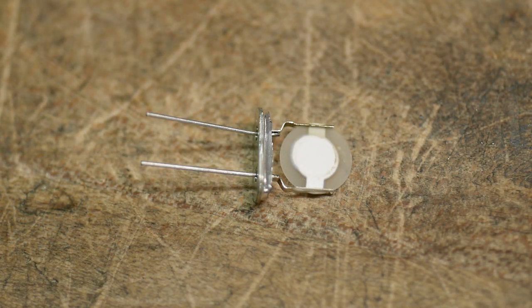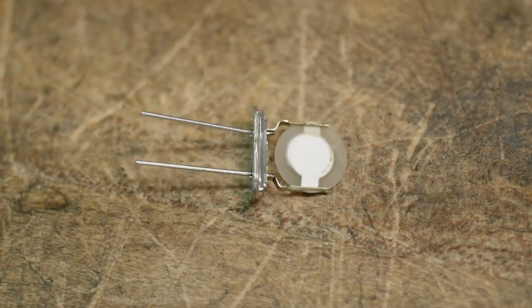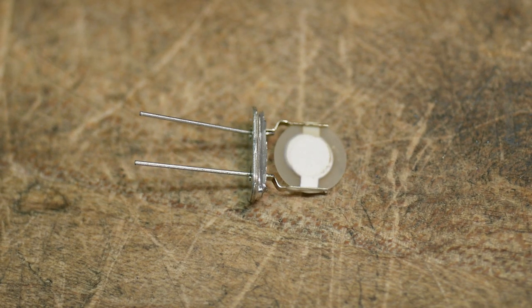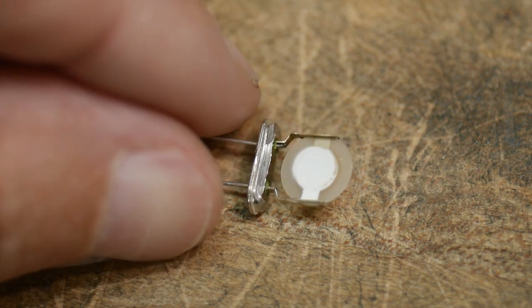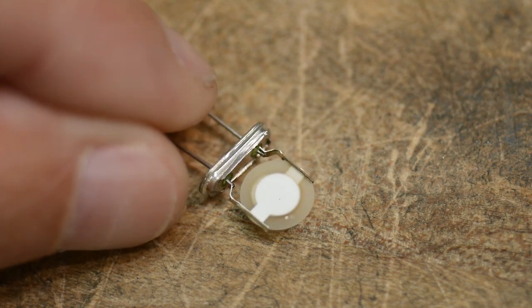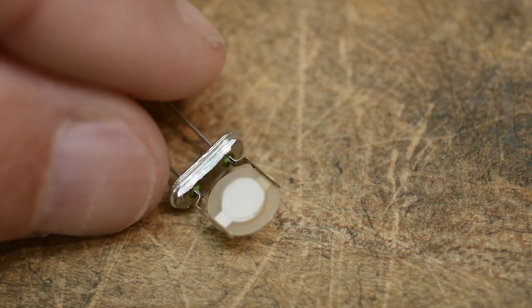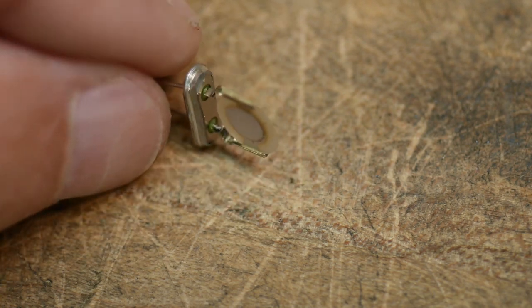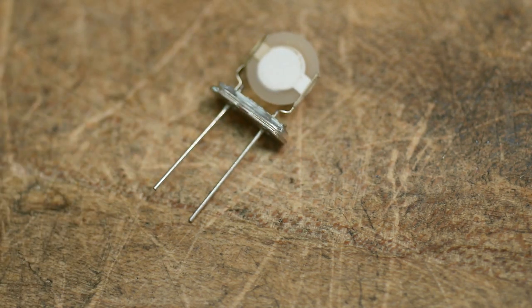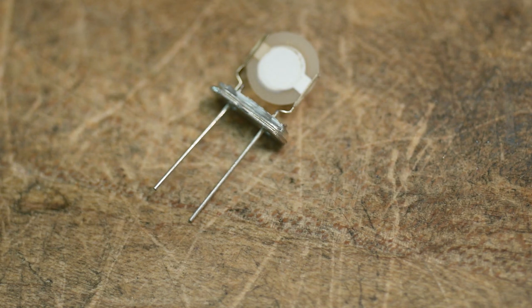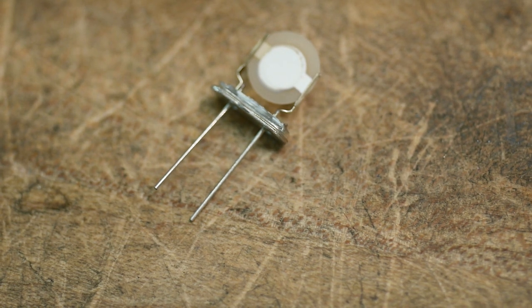Here's the crystal once it's been removed from the metal can. It's a piece of quartz with some type of metal coating on both sides, I don't know if it's silver or something like that. It's held by the edges so it can vibrate, and one wire contacts one side and the other wire contacts the other side.